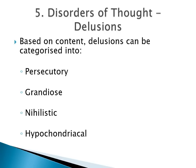Based on content, delusions can be classified into different types. Persecutory delusions are the most common type seen in clinical practice, commonly referred to as paranoid delusions — the patient has beliefs of conspiracy against them, that their life is under threat, that they are being followed or monitored by cameras. Grandiose delusions are typically seen in mania, where the patient overestimates their own abilities and acts on those beliefs — for example, a patient who is not very rich might start believing they have a lot of money and make expensive purchases using credit cards.